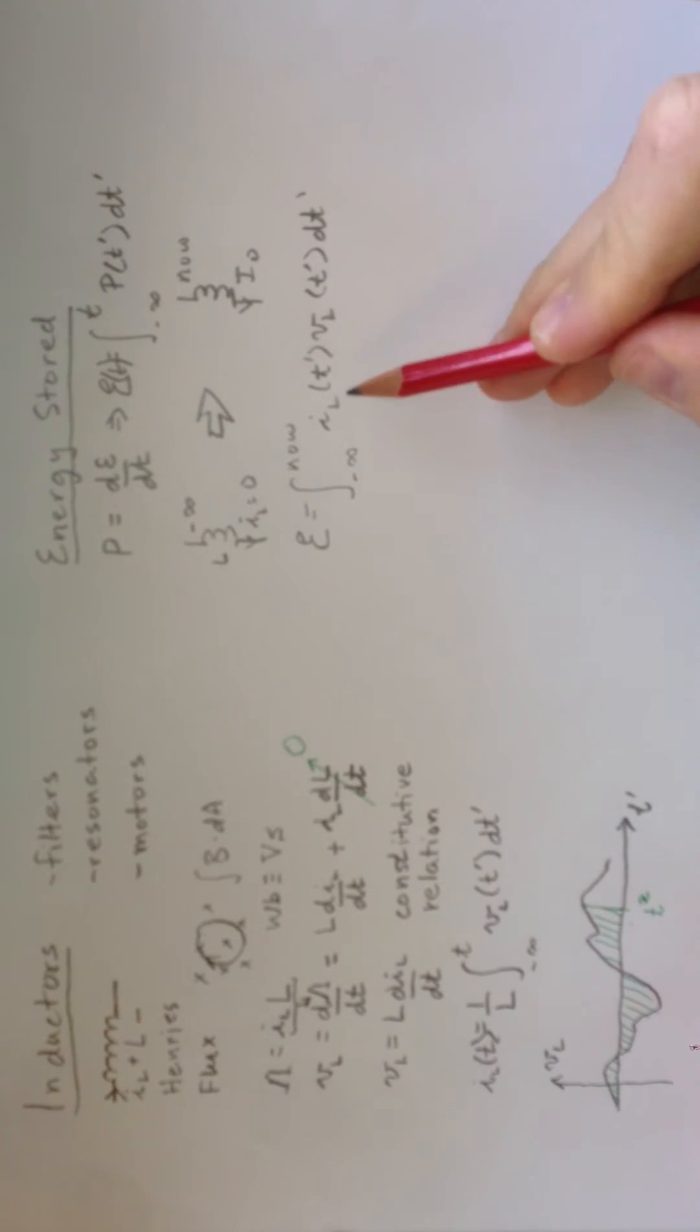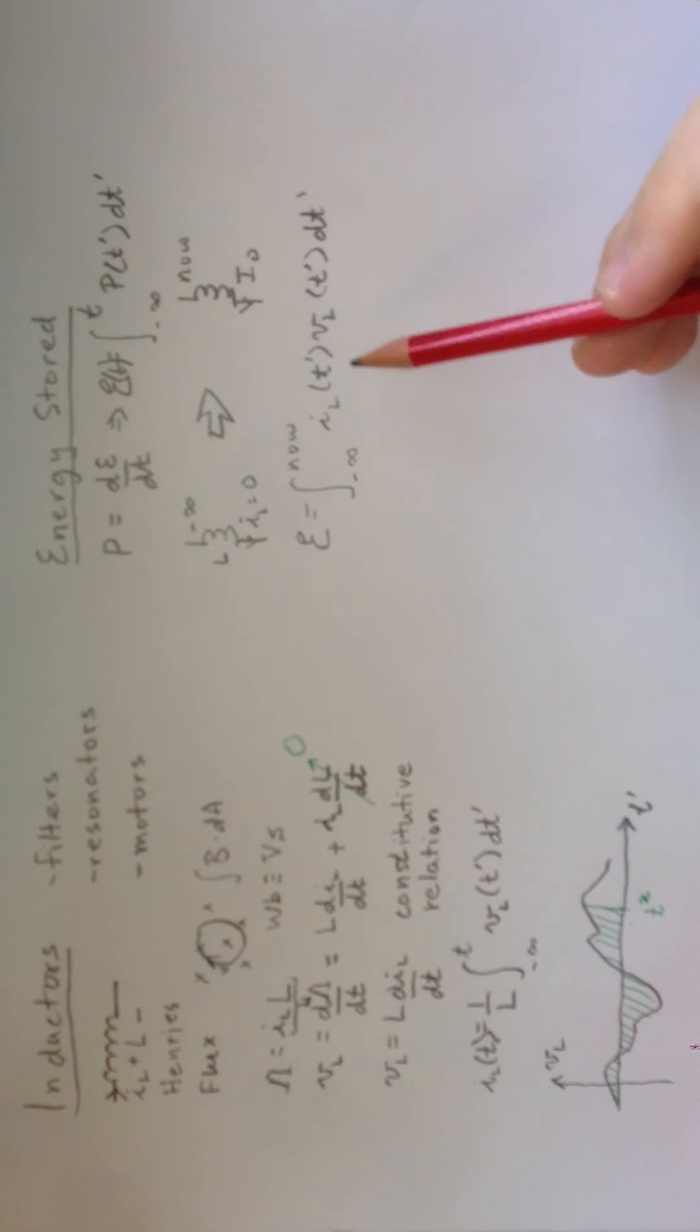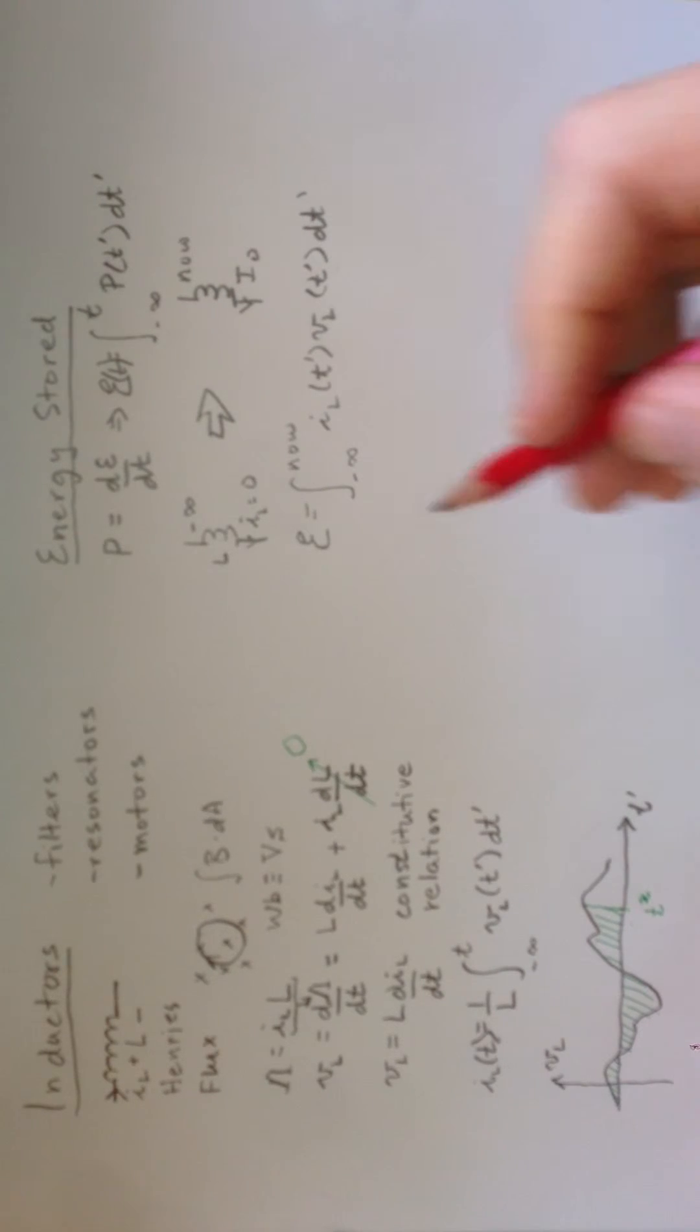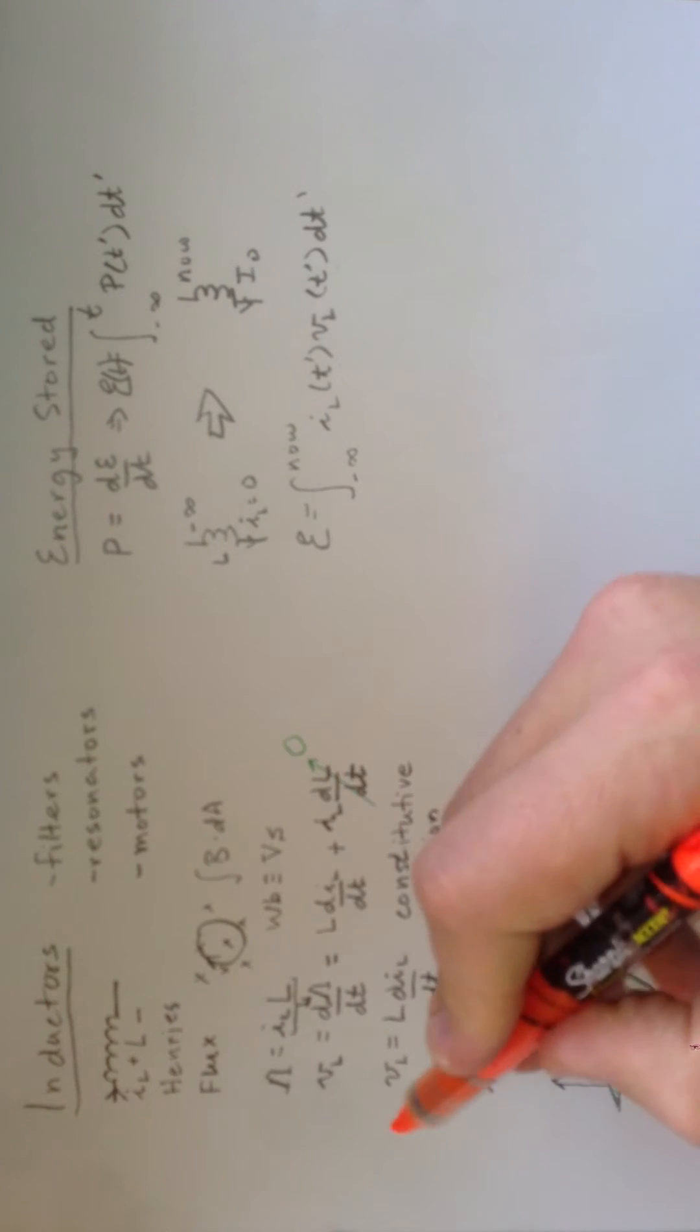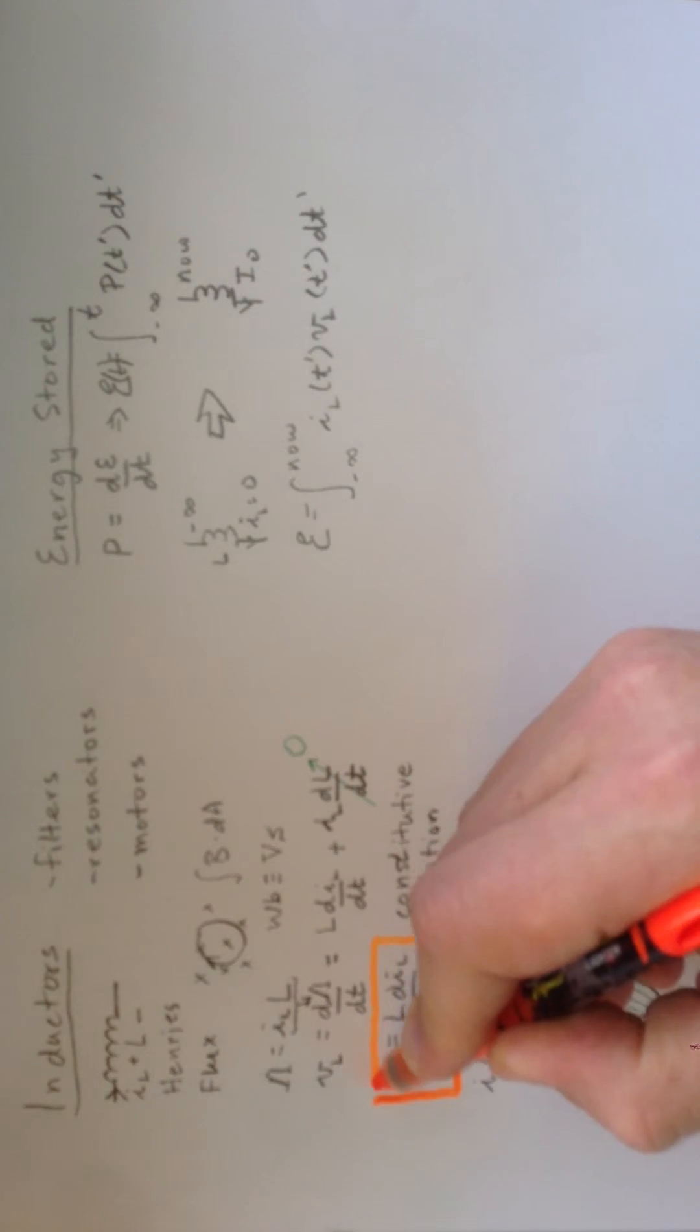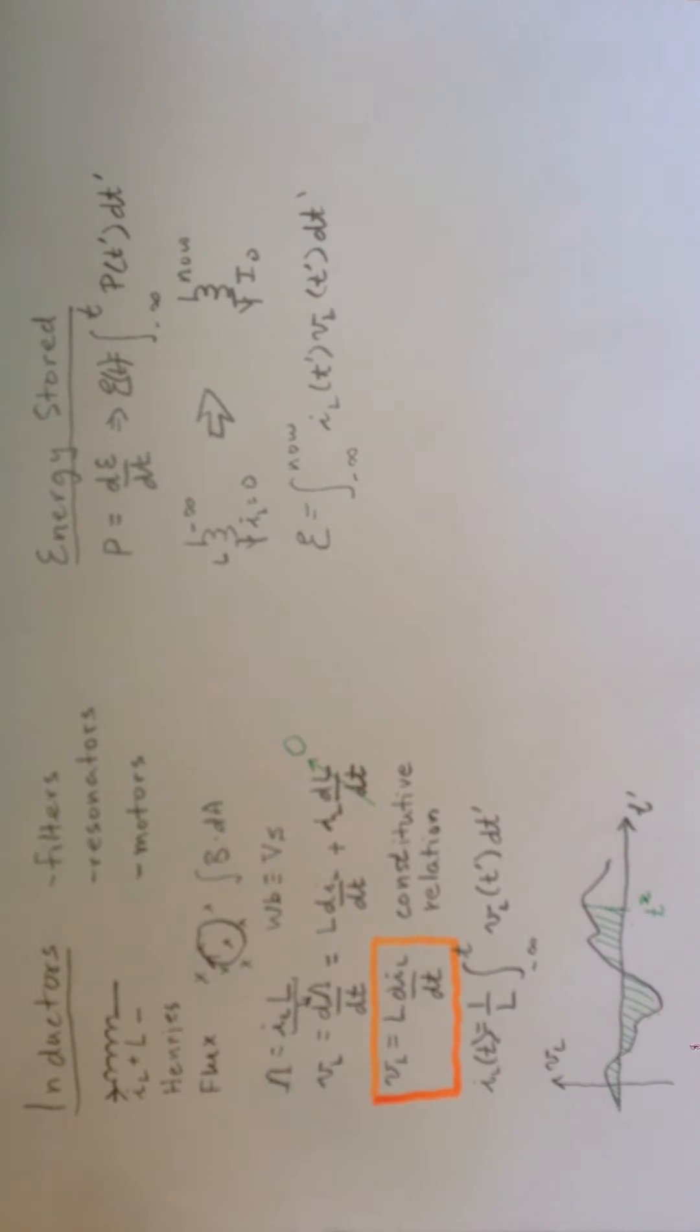Now, we're stuck, though, because we don't know how to do this integral. Because we're integrating IL, we don't know the dependence of IL on t prime, we don't know the dependence of VL on t prime. We do know this constitutive relation over here, though, right? This thing is a pretty significant fact about inductors, and so we can use that.